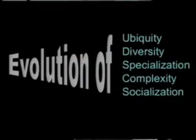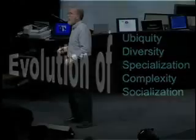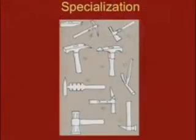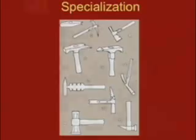Ubiquity, diversity, specialization, complexity, and socialization. I took that and asked: what are the long-term trends in technology? Remarkably, I discovered that there's also a drift toward specialization — we see there's a general hammer, and hammers become more and more specific over time.